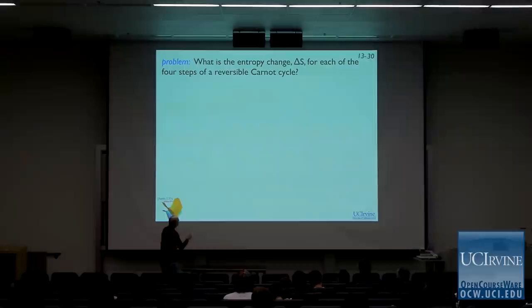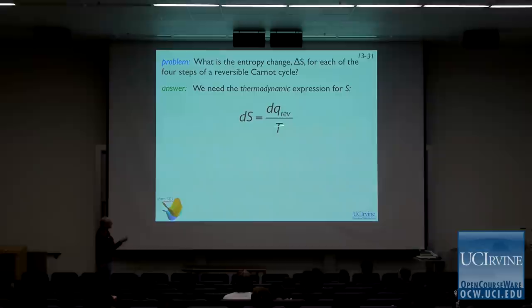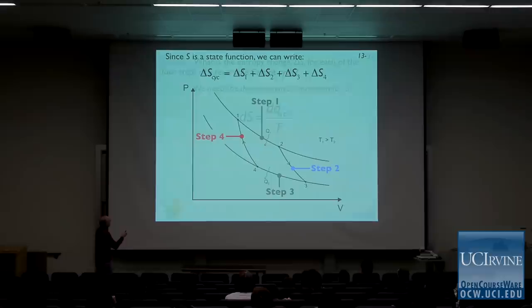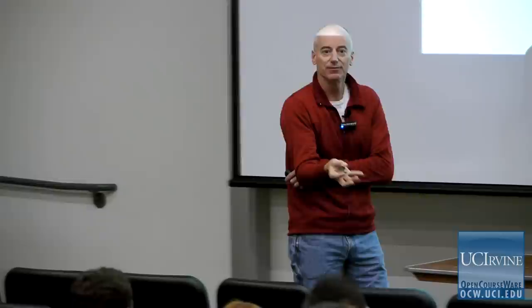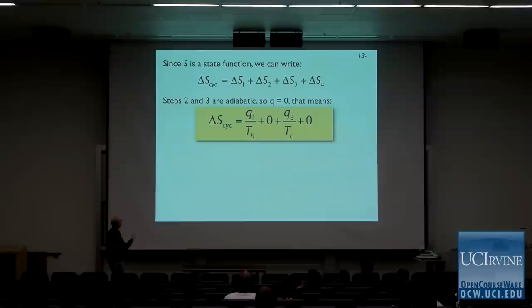What's the entropy change for each of the four steps of the reversible Carnot cycle? We need a thermodynamic expression for S. The change in entropy is the change in heat — provided the process is reversible — divided by the temperature at which the process is occurring: dS = dQ_rev / T. The reversibility issue turns out to be important; that's the reason this is an equal sign. Because delta S is a state function, the delta S for the whole cycle is just the sum of the delta S values for the individual steps.